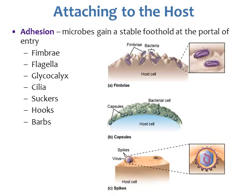Once the microorganism gets into the host through a portal of entry, we have adhesion — the microorganism actually attaches to the host cells. Microorganisms gain a stable foothold at the portal of entry using their fimbriae, which are the short hair-like structures that help the bacteria cell attach and hold on to the host cell. We also have flagella used for adhesion, helping bacteria move to different parts of the body, and the glycocalyx — an outer sticky covering made of carbohydrates — that helps bacteria stick together.